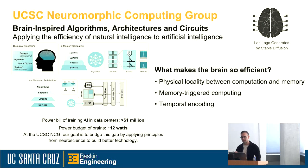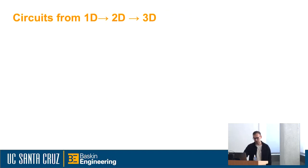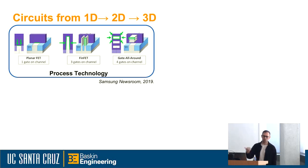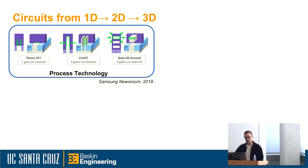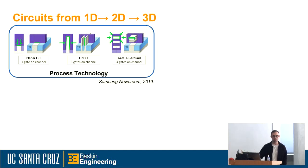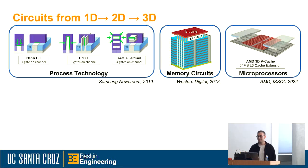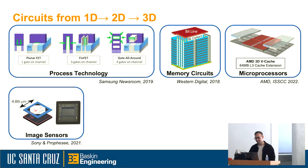Biological neurons communicate via spikes, and what we really care about is when a spike occurred or how frequently spikes occur from given neurons. We've seen the trend going from 1D to 2D to 3D, both at the process level up to memory integration — planar FETs controlling one dimension, thin FETs for two dimensions, gate-all-around FETs in 3D. Memory circuits take up vertical real estate, microprocessors with vertical cache throw SRAM on top of the processor. Image sensors have done the same.